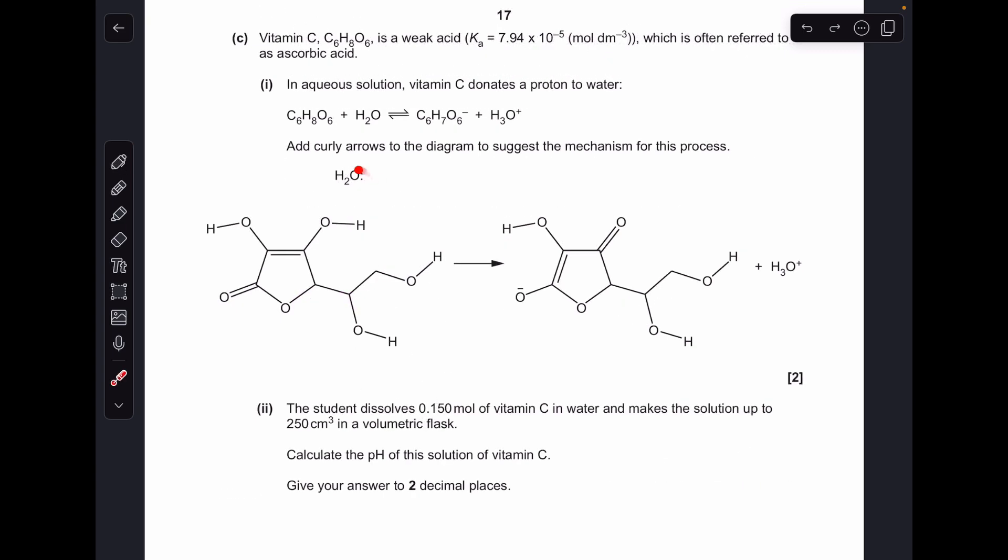Moving on to part C, we've got to add some curly arrows to show how these have been generated. Looking at what's changed, we've gone from this OH group here to this C double bond O. What must have happened is the pair of electrons on that oxygen has grabbed that hydrogen, and then the pair of electrons in the OH bond have gone to there to generate the C double bond O. That explains the H3O+ and the C double bond O.